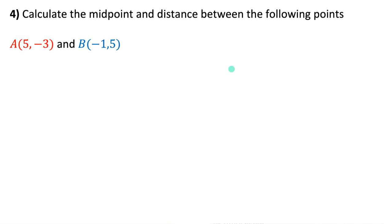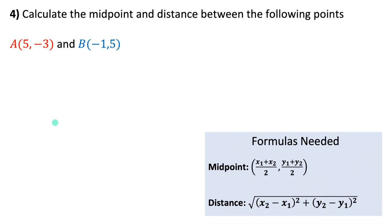Next you need to know how to calculate the midpoint and distance of a line connecting two points. I've got point A and point B. For midpoint, label A as your first point: x₁ = 5, y₁ = −3, and B as second: x₂ = −1, y₂ = 5. The midpoint formula averages the x-coordinates and the y-coordinates. So the middle of the two points is at the average of x and the average of y.